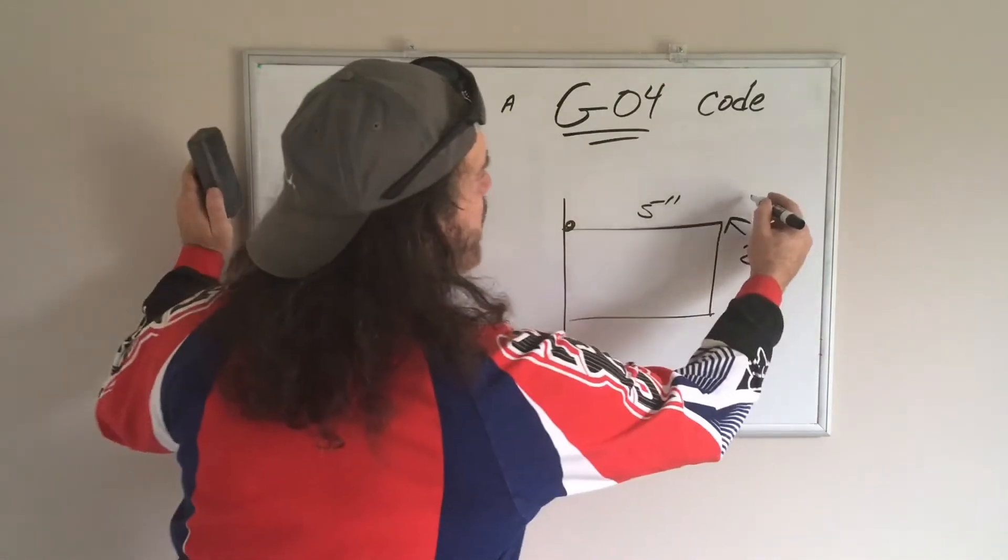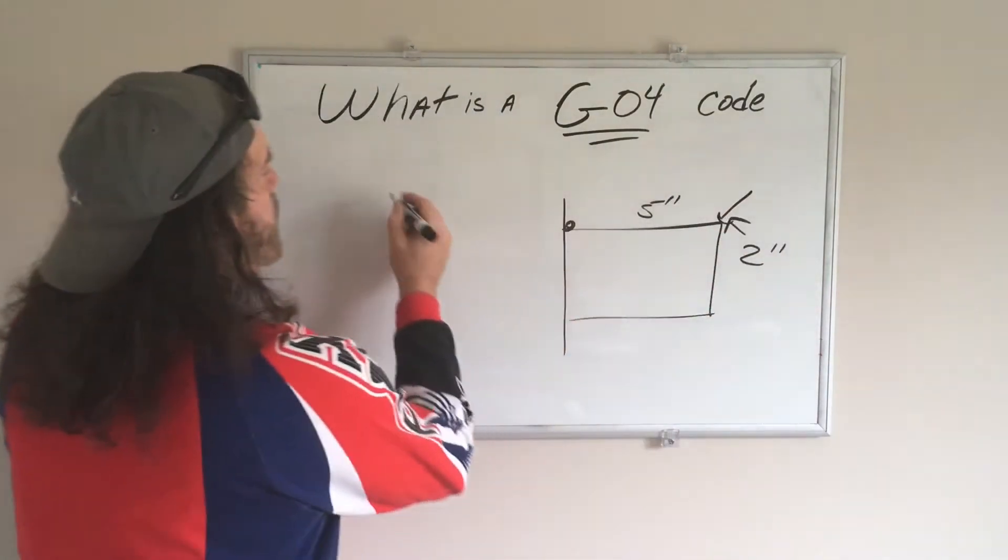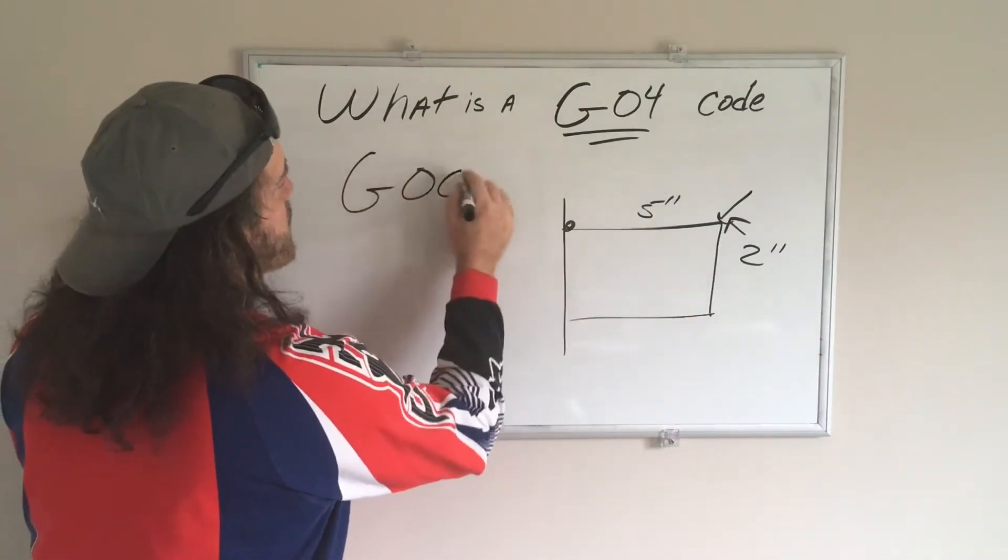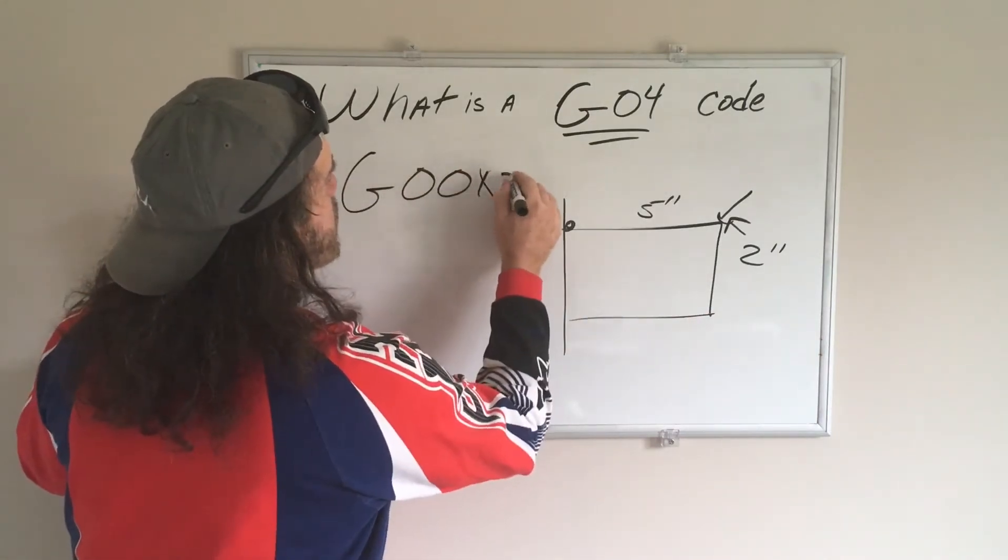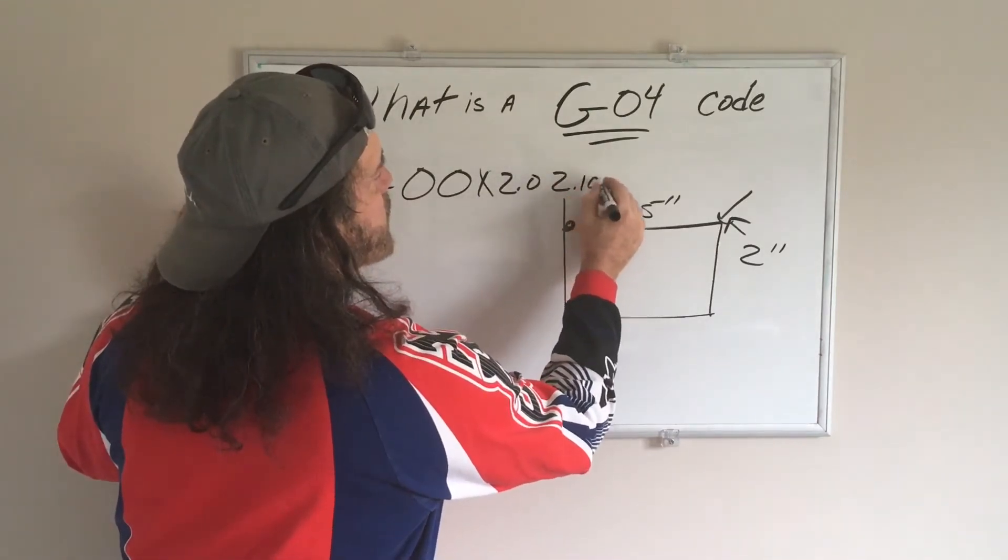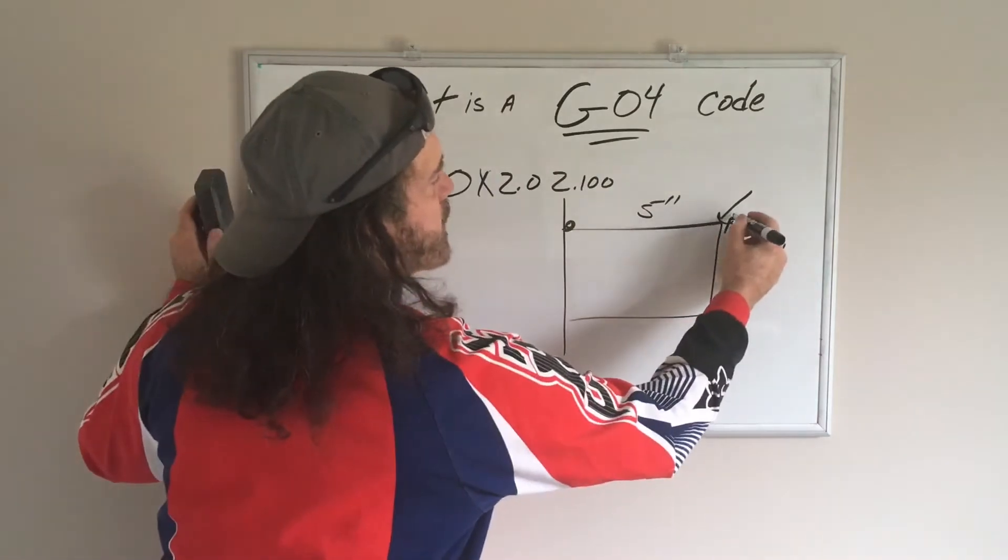we're going to rapid down to here, I'm not going to go through everything, so we'll rapid to X two point, and we'll stay one hundred thousandths in front of the part, so you're actually out here.